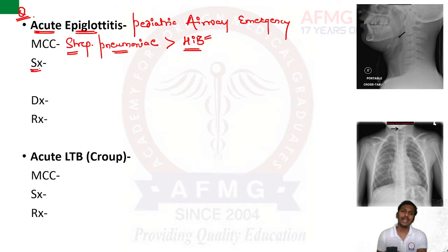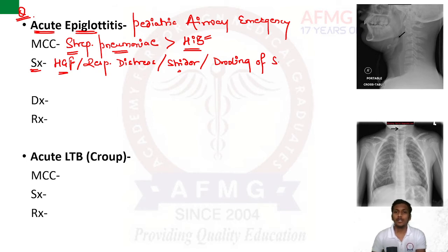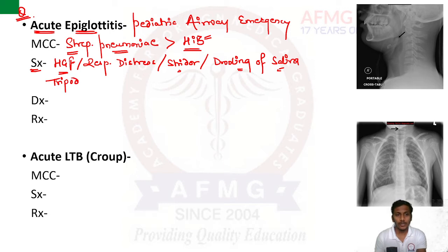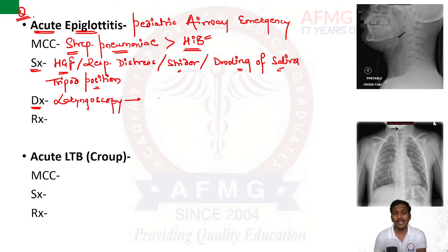Symptoms of acute epiglottitis: very high-grade fever with acute onset, respiratory distress, stridor in a calm child, and importantly drooling of saliva — because laryngeal edema makes swallowing very painful, so saliva continuously drools from the mouth. The child attains a tripod position to relax, and severe respiratory distress can cause hypoxemia or central cyanosis. On laryngoscopy, a cherry red epiglottis — inflamed and swollen — is found.